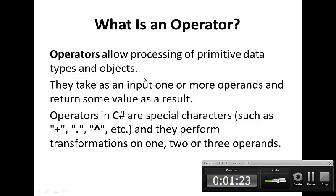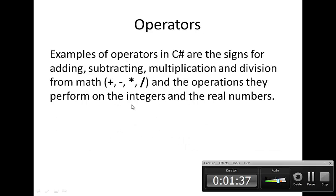Operators allow processing of primitive data types and objects. They take as input one or more operands and return some value as a result. Examples of operators in C-Sharp are the addition sign, the subtraction sign, the multiplication sign, and the division sign.